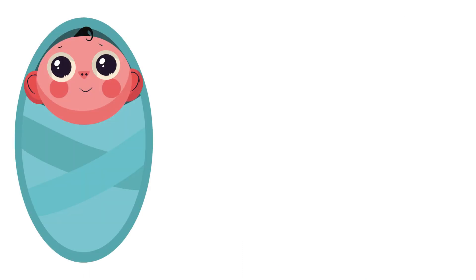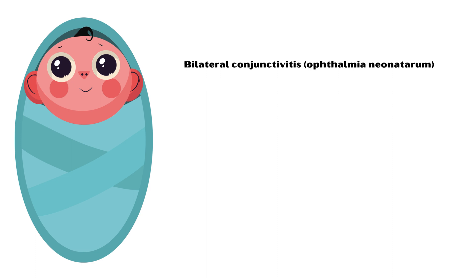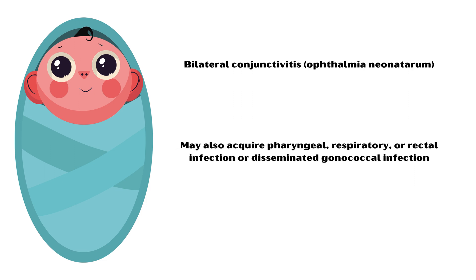In neonates, gonococcal infection can cause bilateral conjunctivitis, also known as ophthalmia neonatorum. If not treated early, this can lead to permanent blindness. Neonates may also acquire pharyngeal, respiratory, or rectal infection, or disseminated gonococcal infection.